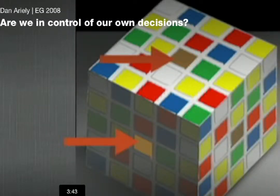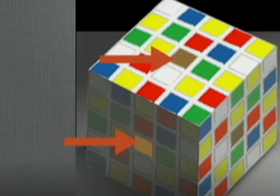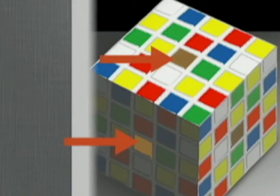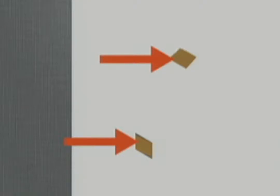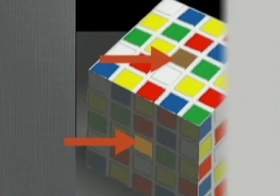When you look at the Rubik's cube and the blocks that the two arrows are pointing to — what color is the top block, and what color is the bottom block? Turns out that if I cover up all of the other blocks, you can see very clearly that they are both identical. But when I put all of the colors back, the optical illusion comes back.